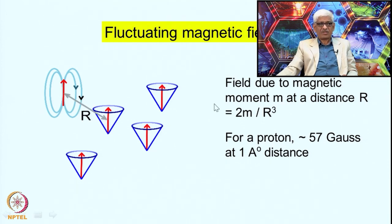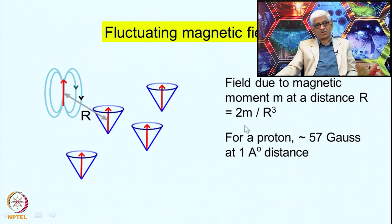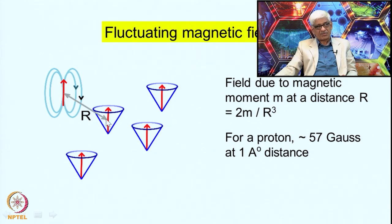If we plot the transverse component of this H_local field as a function of time, it represents the motions of the spins in solution and fluctuates in a random manner. This random fluctuation can be described by certain frequency components — any time-dependent fluctuation has frequency components. We can write the fluctuation as a summation of multiple frequencies: the sum of cosine terms with frequencies ωi and amplitudes ai. As we add more regular frequencies with different amplitudes, we generate a time-dependent function that looks quite random.